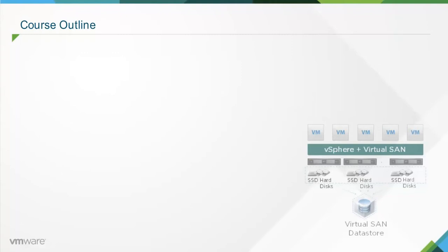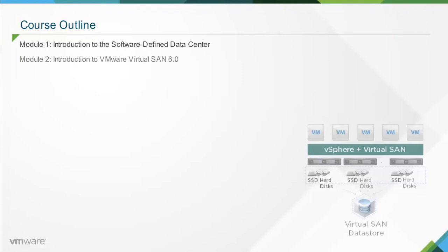The course covers a wide range of topics in its four modules: Introduction to the Software-Defined Data Center, Introduction to VMware Virtual SAN 6.0, Virtual SAN Architecture, and Use Cases. Module 1 provides an overview to SDDC and, specifically, to SDS. Module 2 explains the technical characteristics and benefits of Virtual SAN 6.0 and compares its functionalities and performance with traditional storage. Module 3 describes the architecture of Virtual SAN 6.0. Module 4 explains use cases for Virtual SAN 6.0 features.